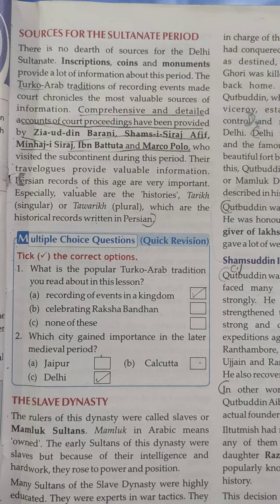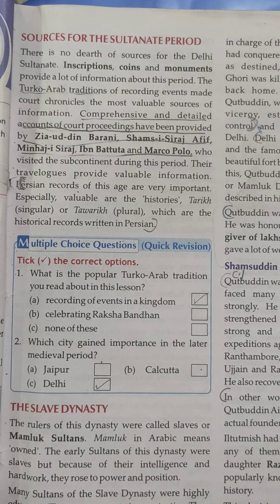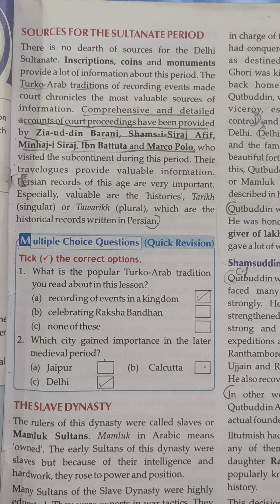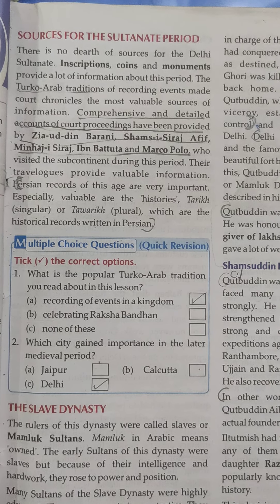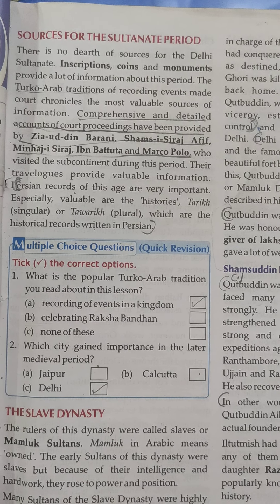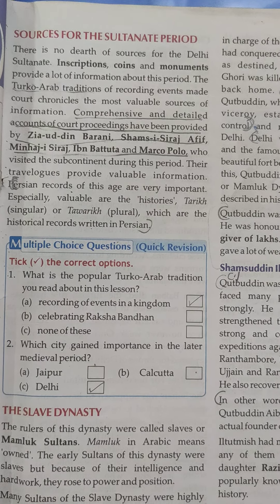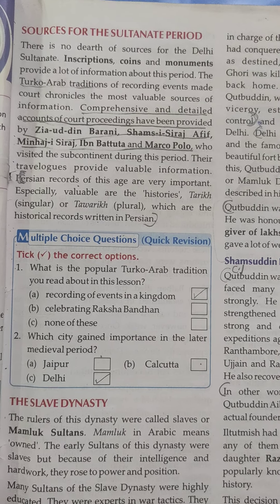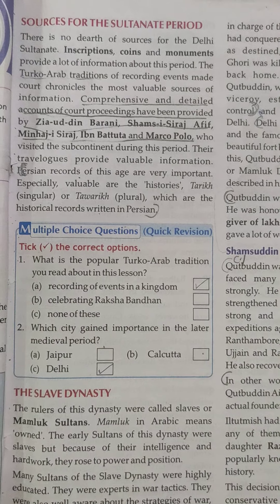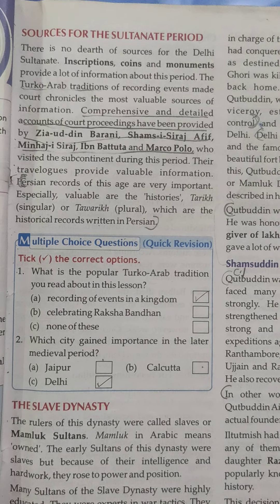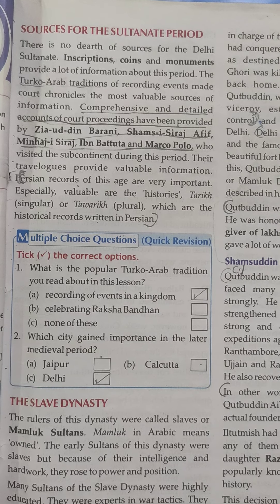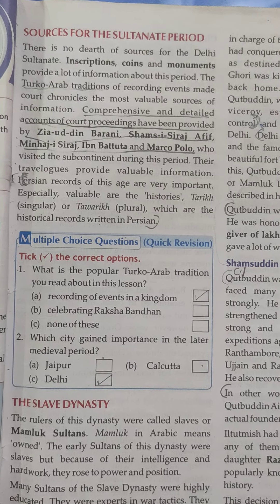Now, regarding sources for the Sultanate period — the Turkish and Arab tradition of recording events made court chronicles the most valuable source of information. These chronicles were maintained date-wise — a chronicle means a timeline — and we get all our information from that.